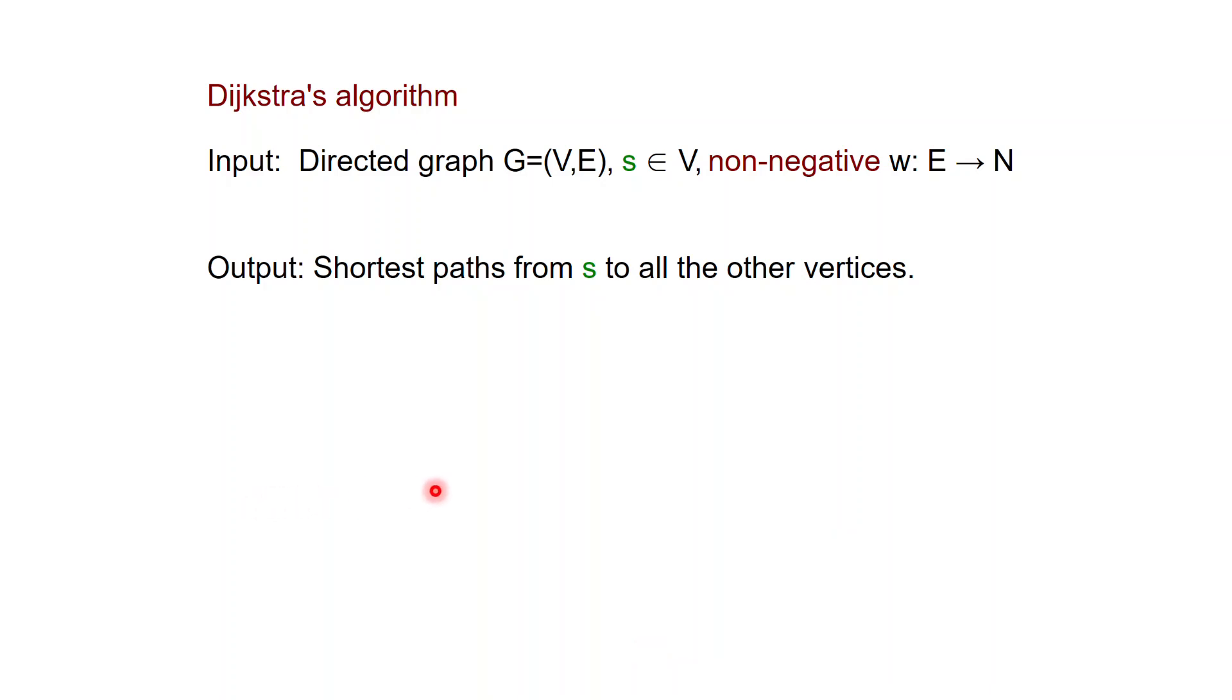In this lecture we are going to see Dijkstra's algorithm for computing the shortest path from a given node S to all the other vertices in the graph. The graph can be directed, it can have a weight function, however the weight function is restricted to being non-negative.